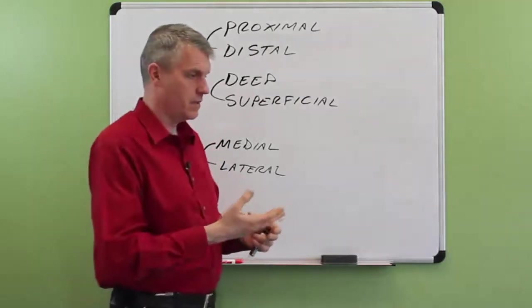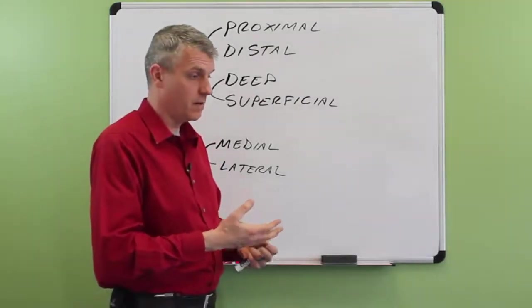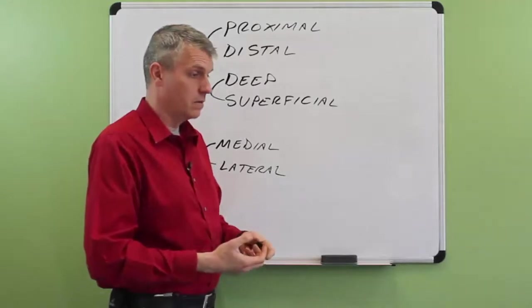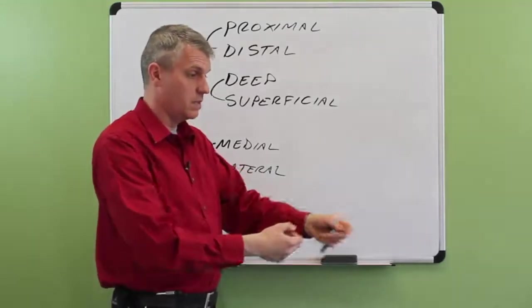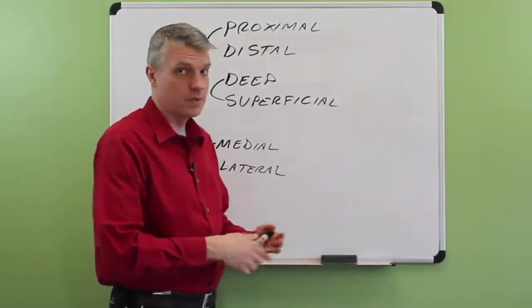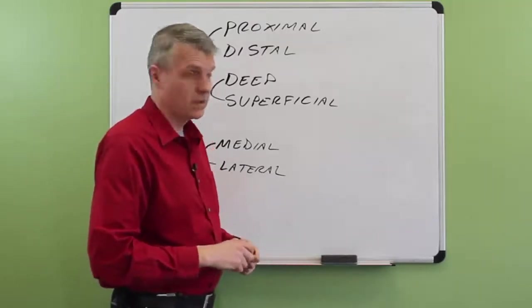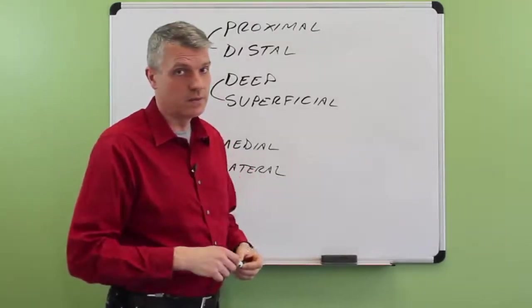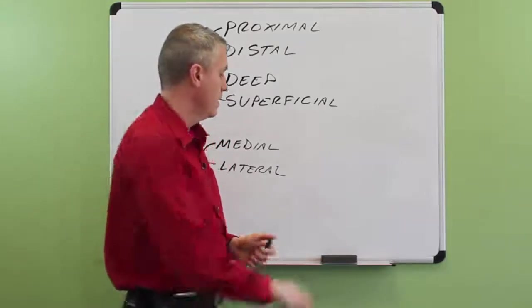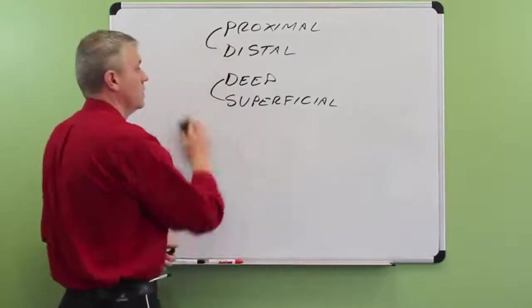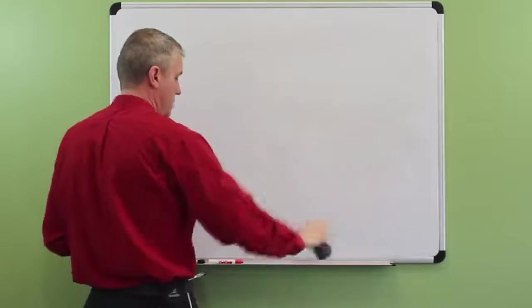And I think that's all of the terms. Let's see. I did anterior and posterior. I did superior and inferior. Medial and lateral. Proximal and distal. And then we did deep and superficial. So, I think those are at least the major directional terms that are used in anatomy. Let's do a bit of a knowledge quiz just to make sure you understand these.